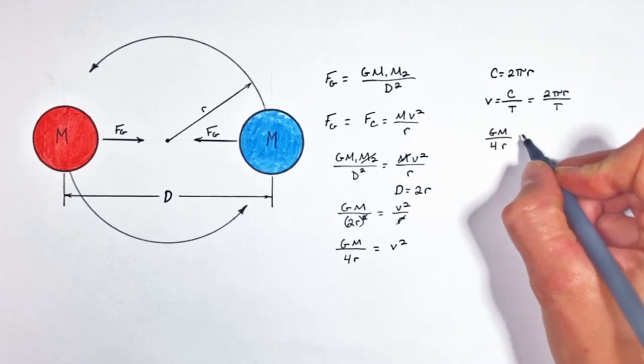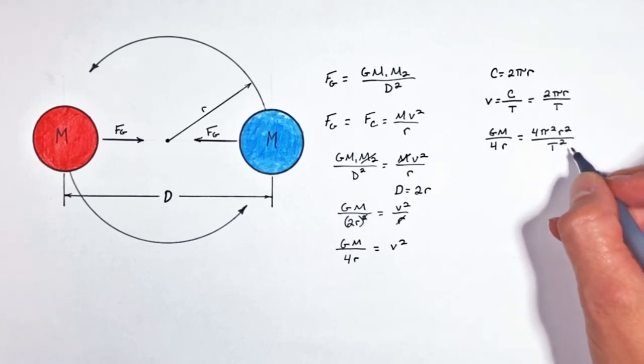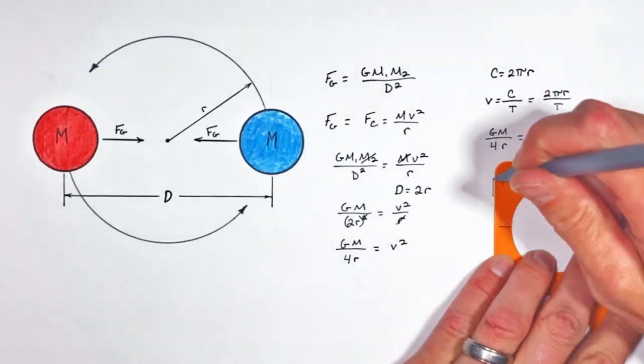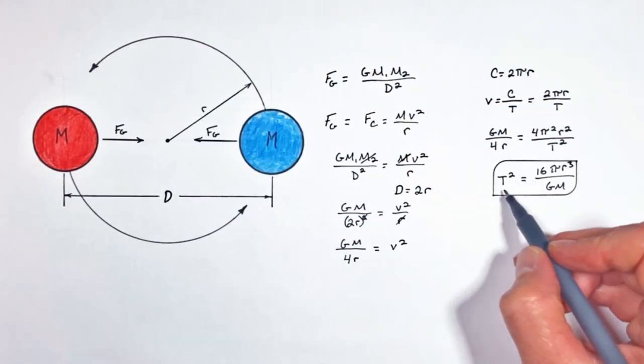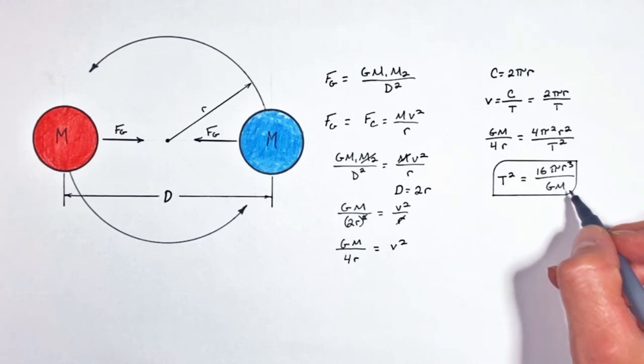So substituting that equation into our original equation for velocity and then rearranging for period, we get this expression relating the period to the radius of orbit as well as the gravitational constant and either of the masses.